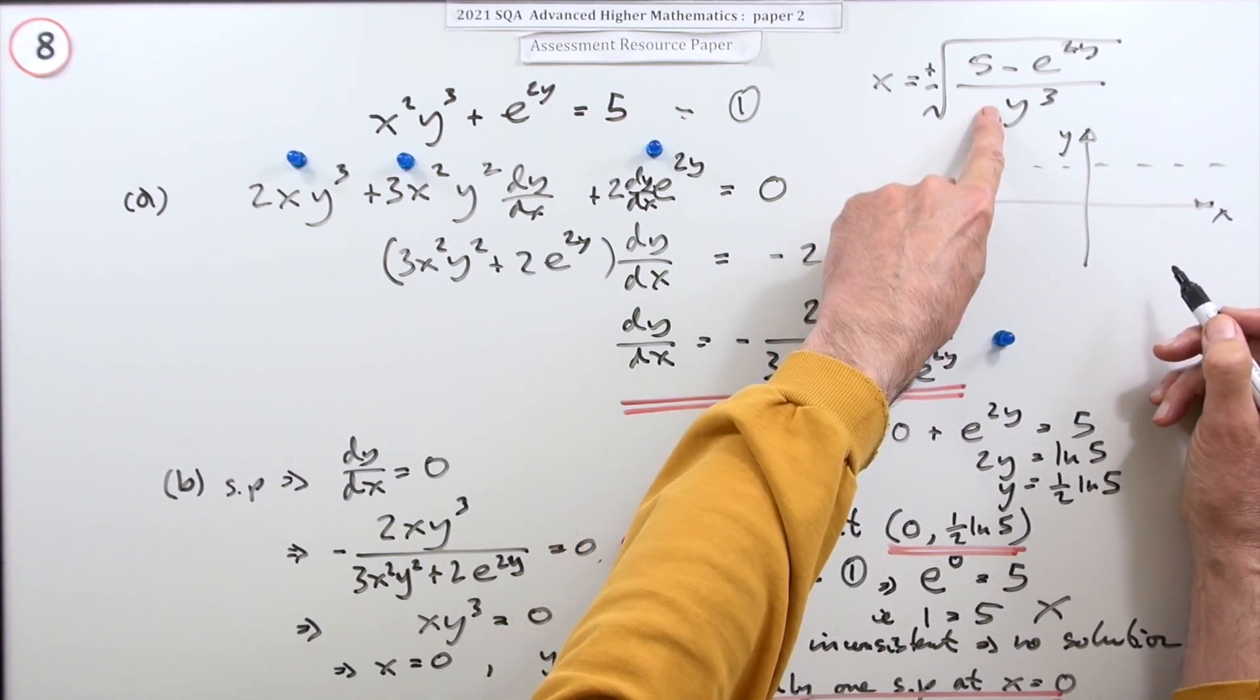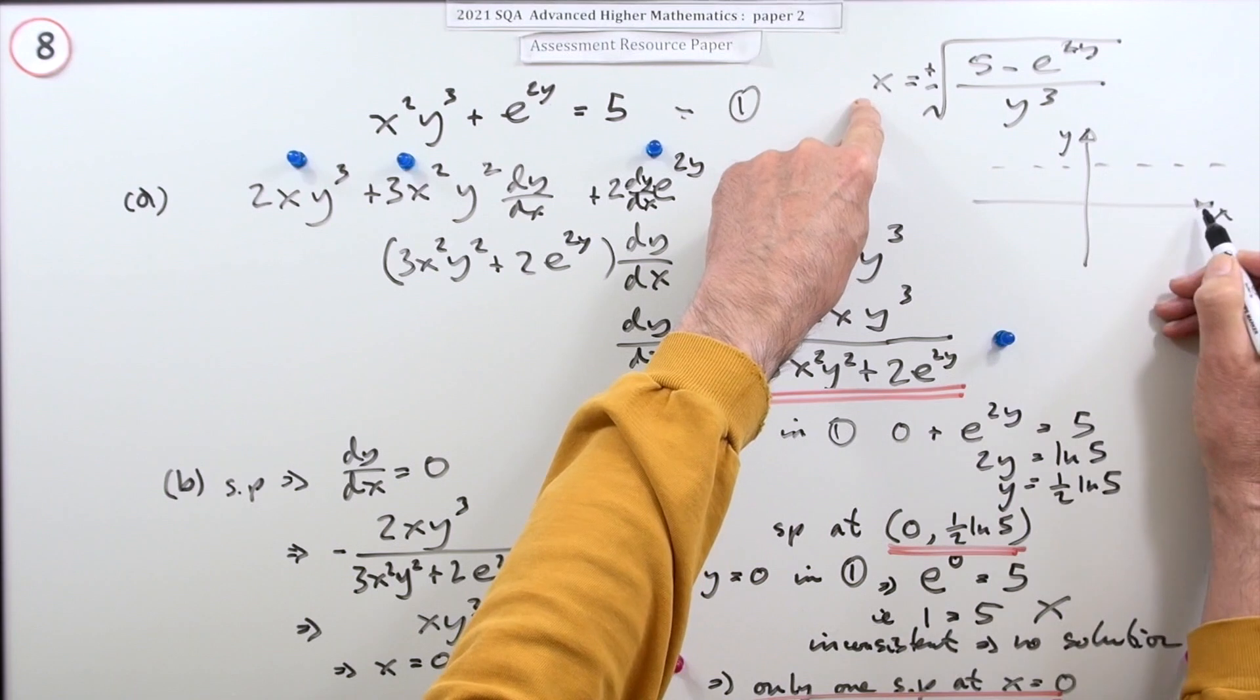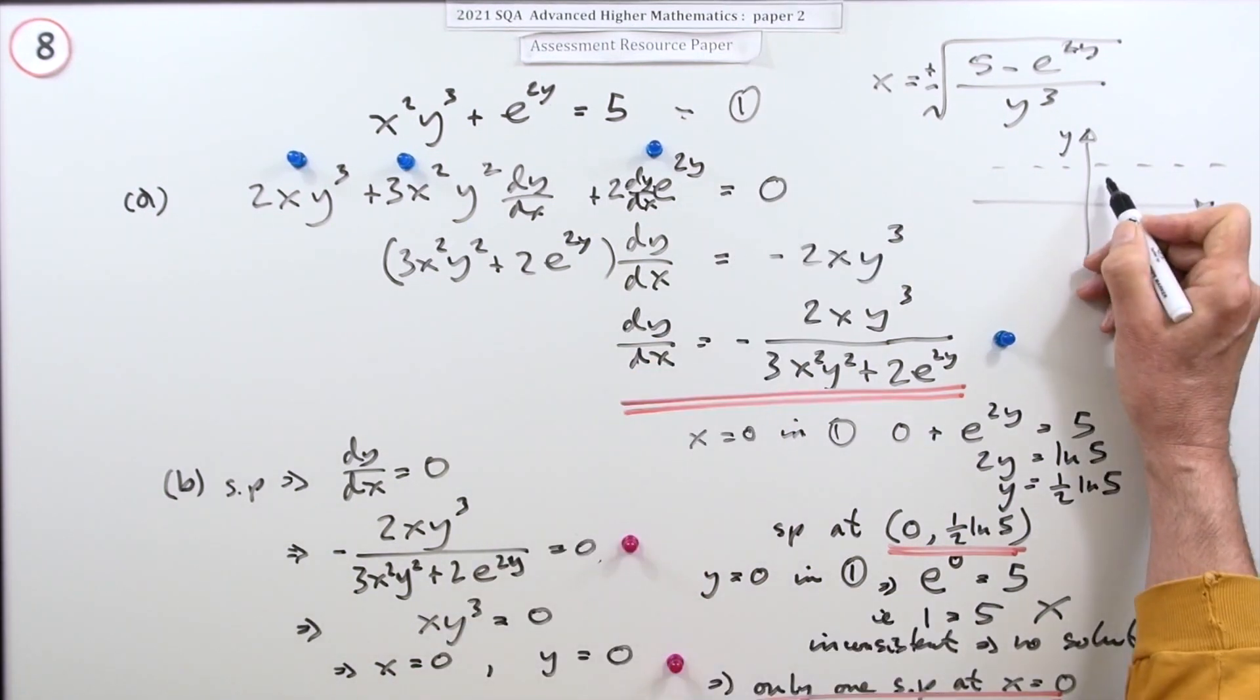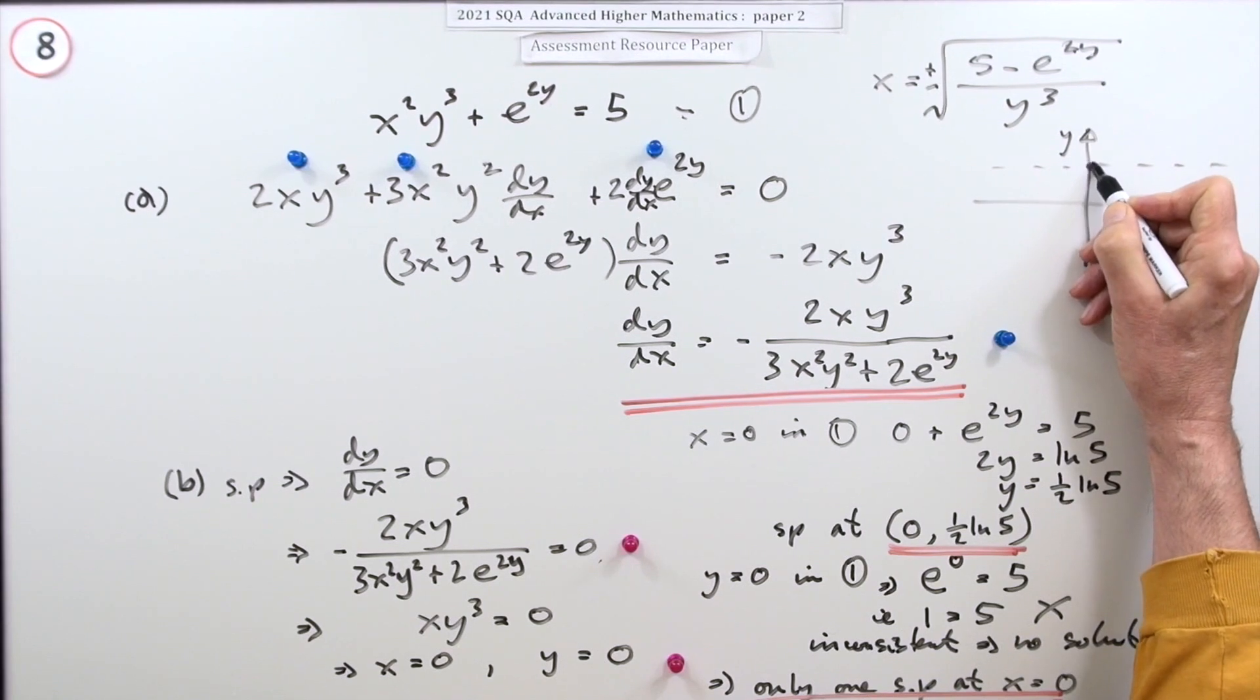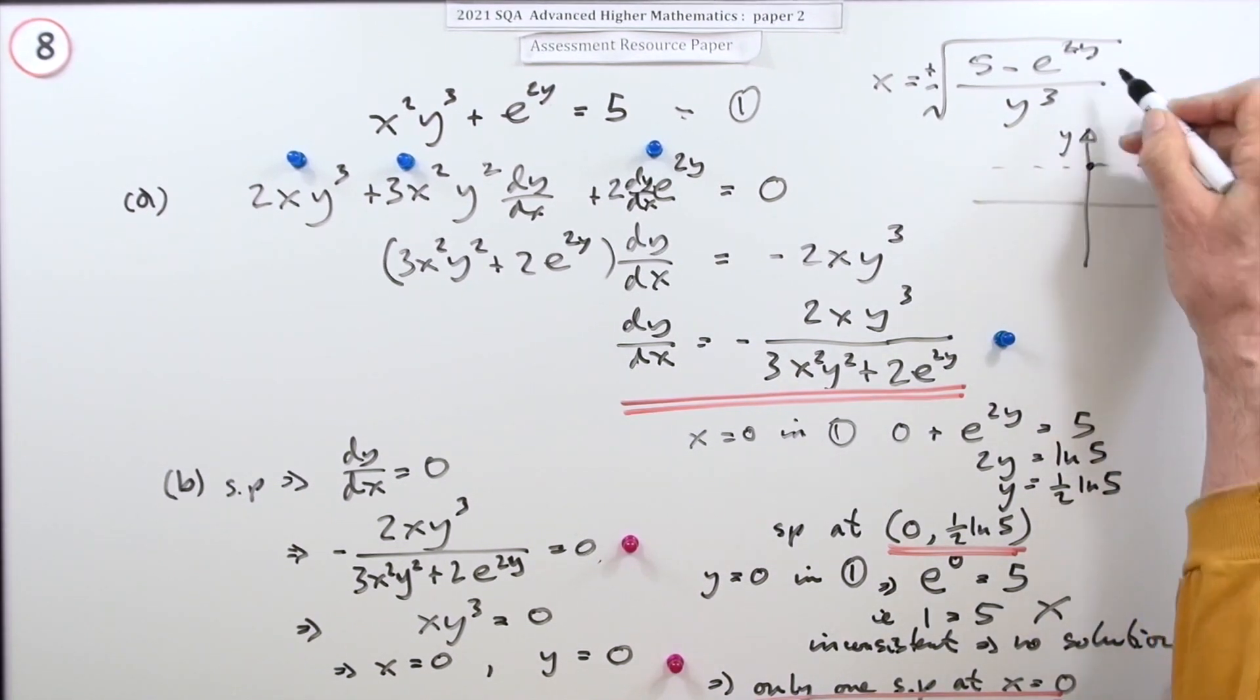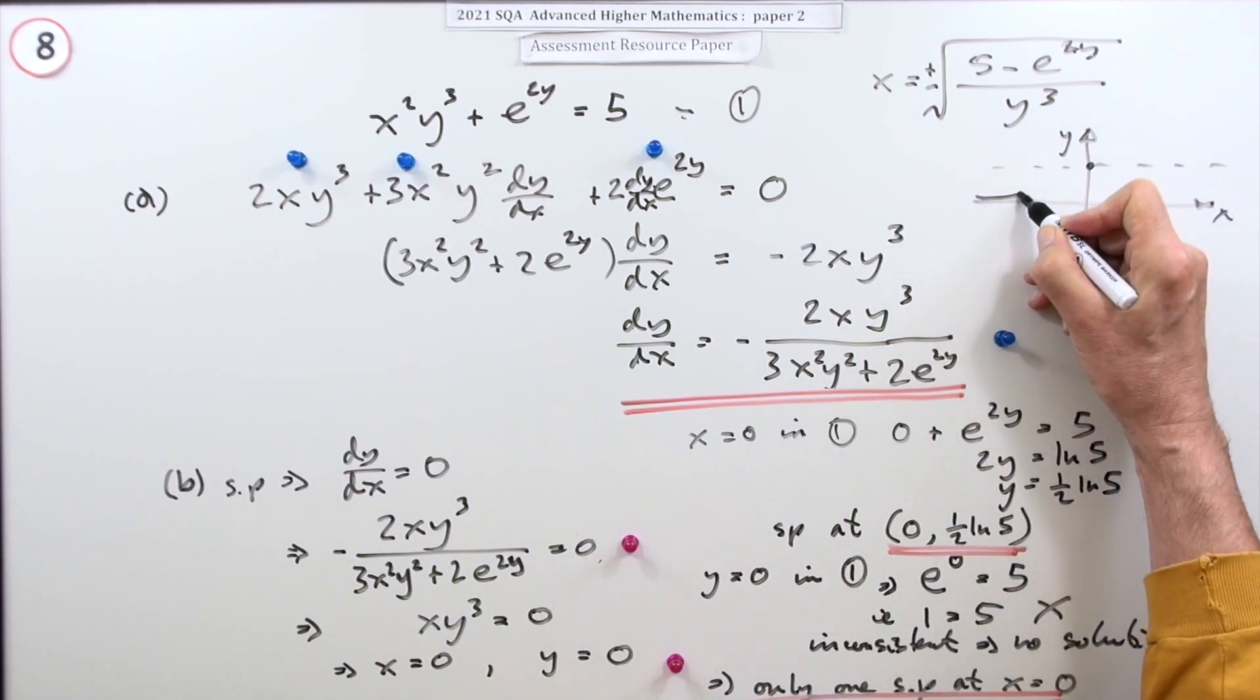Not only that, but y can't be zero. Well there's your answer then, because as y tends to zero, x is going to go off to infinity. And it'll be replicated - that's the plus and the minus. And there was a limit here at y = ½ ln 5. So the graph looks like this.